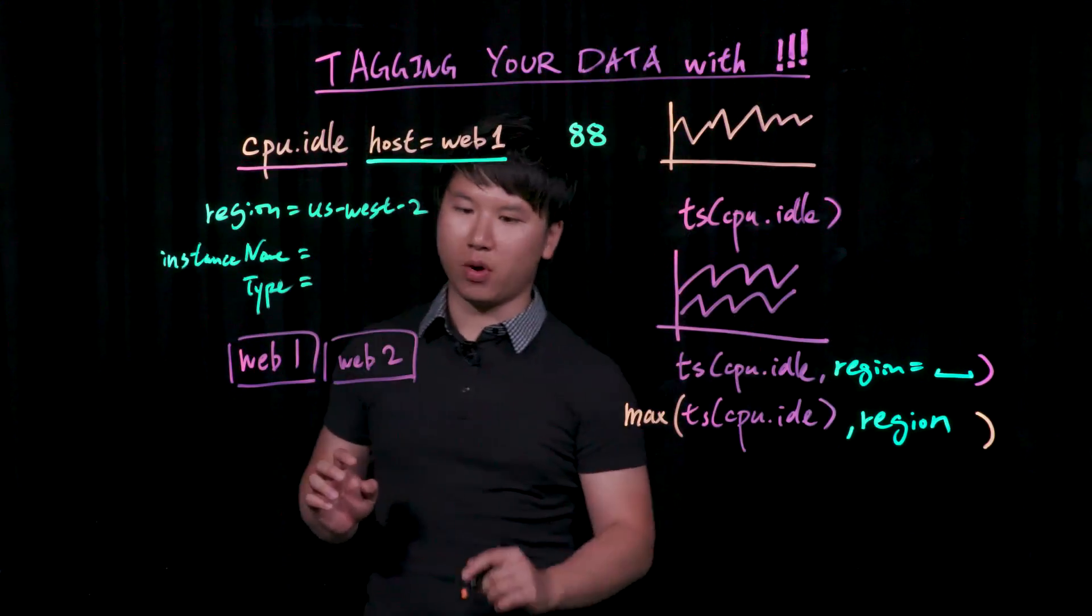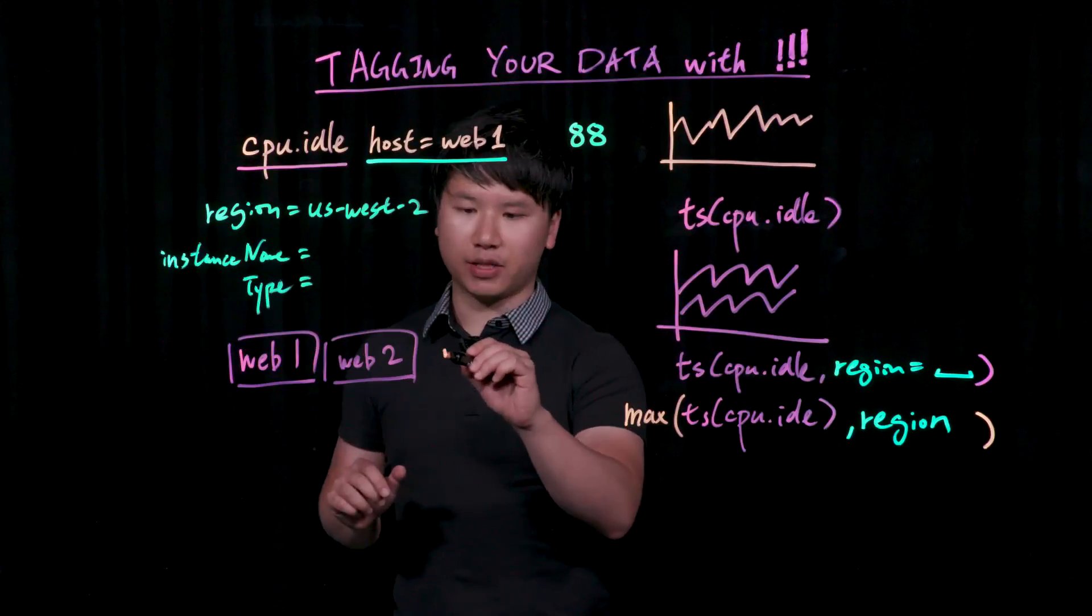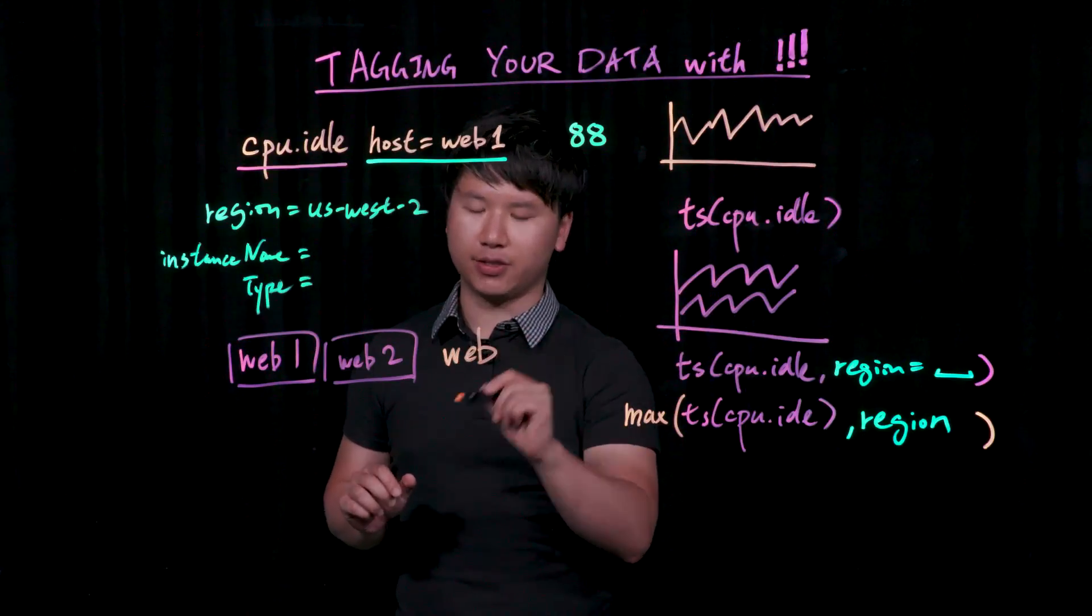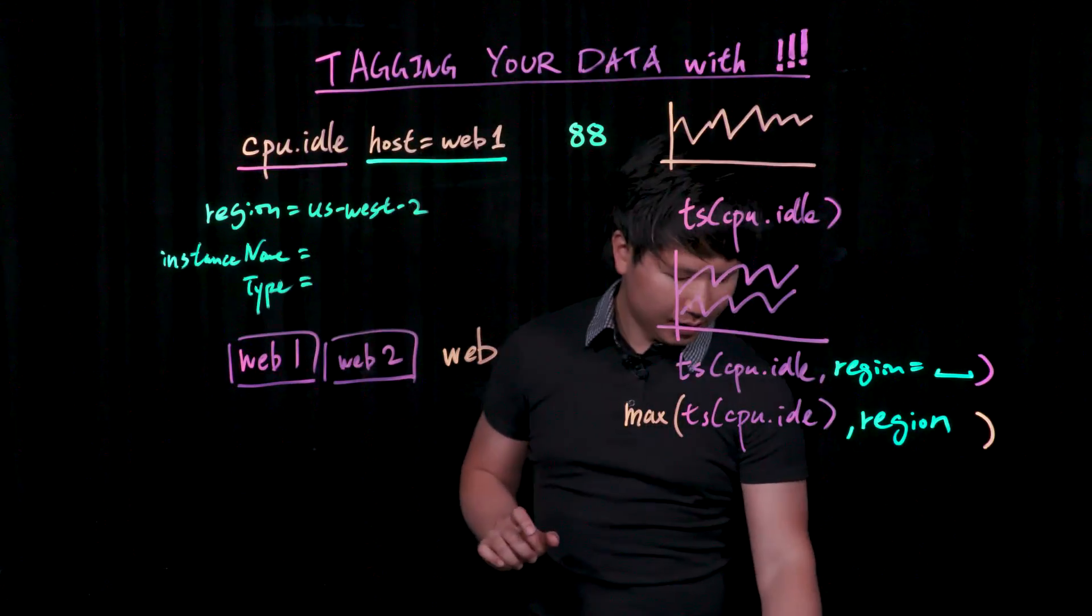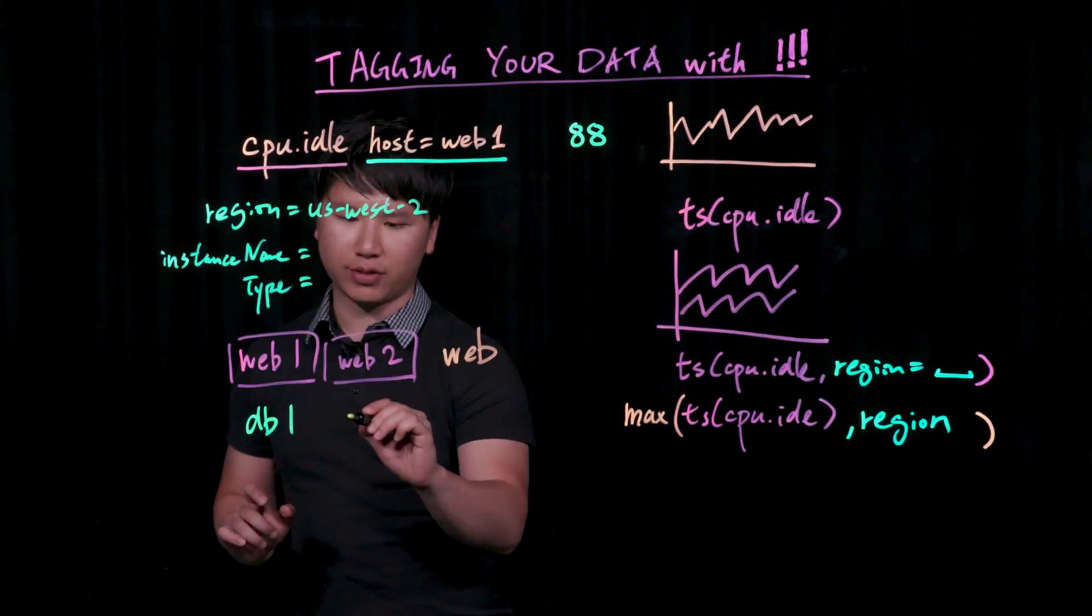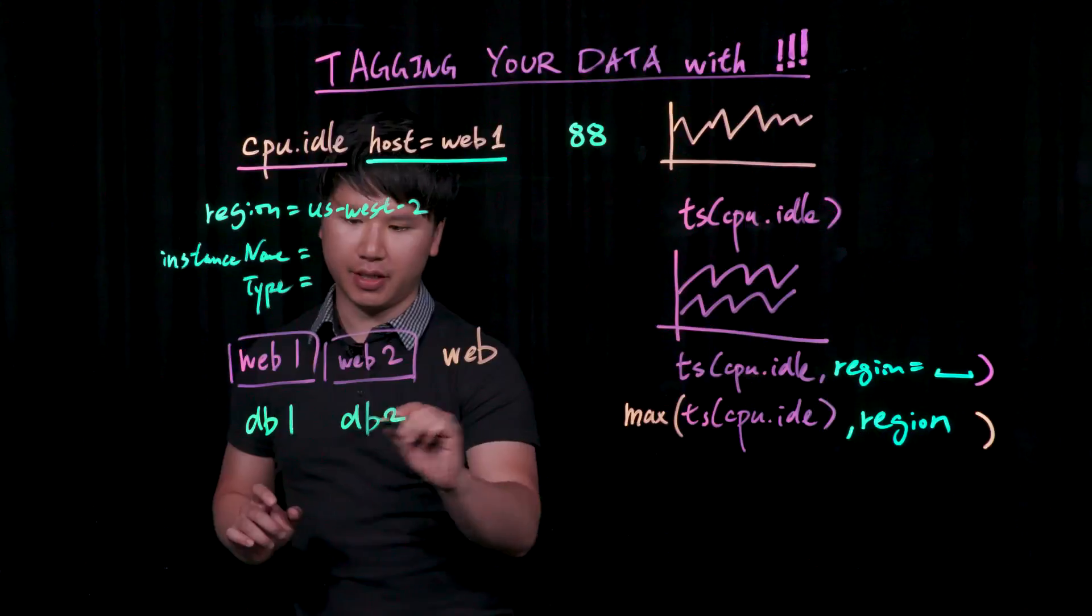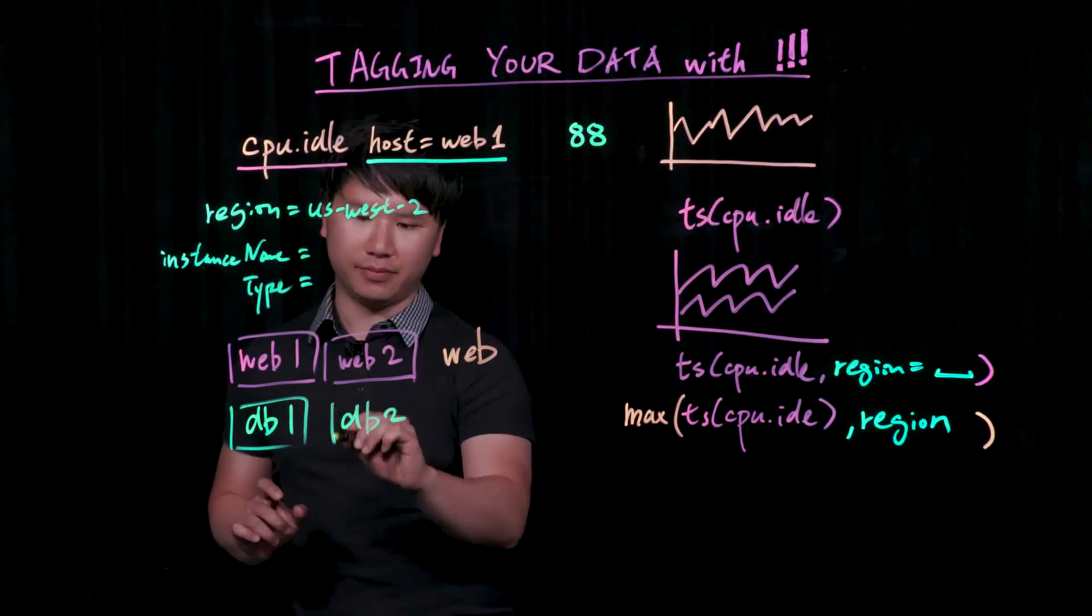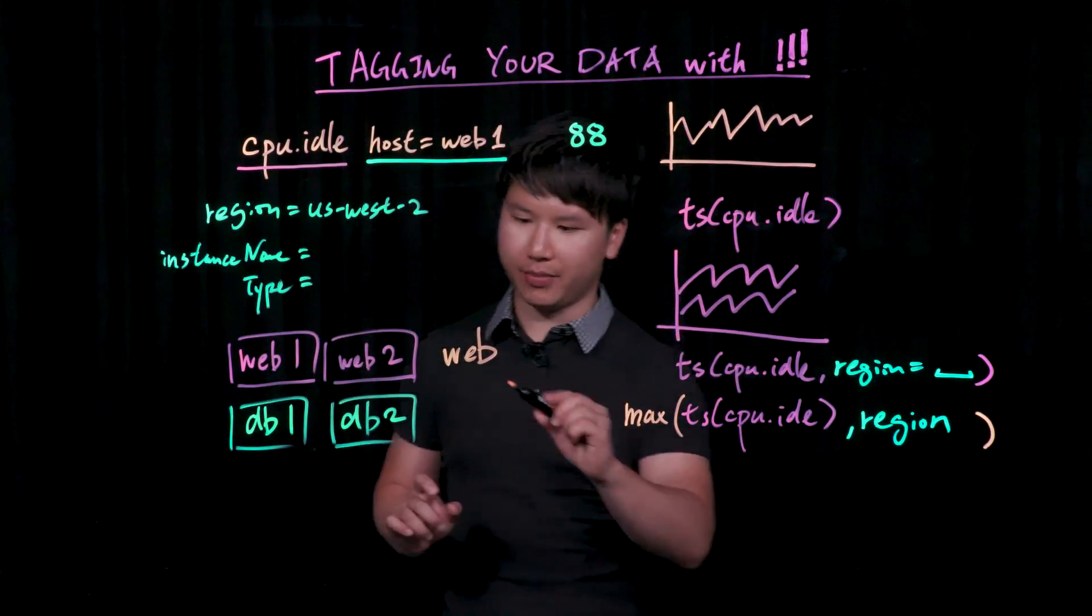What you can do in the UI, as well as via API, is to tag them as web. Let's say, for example, you also have databases. And in this example, also two databases. And you want to tag them as database, db.